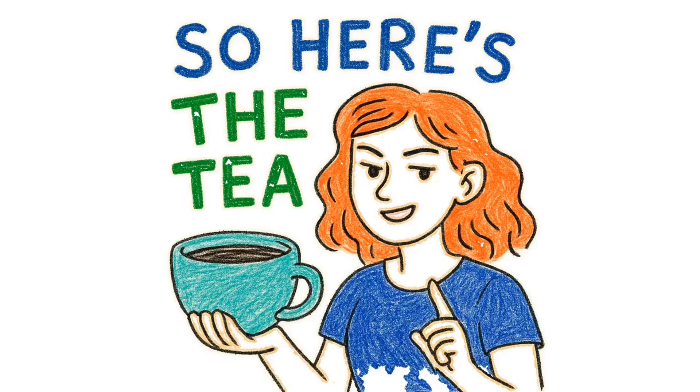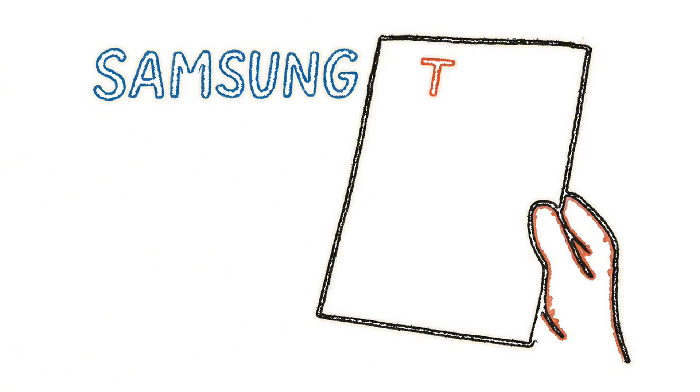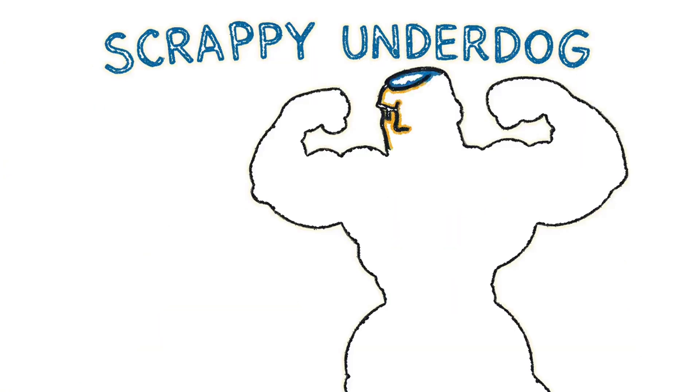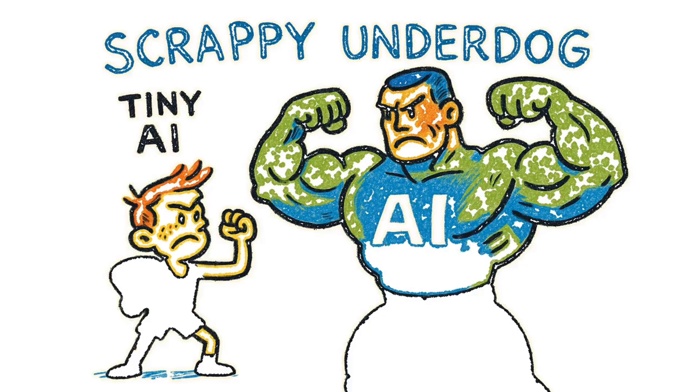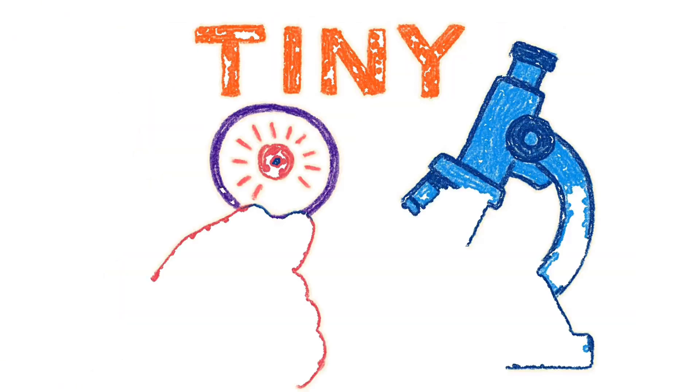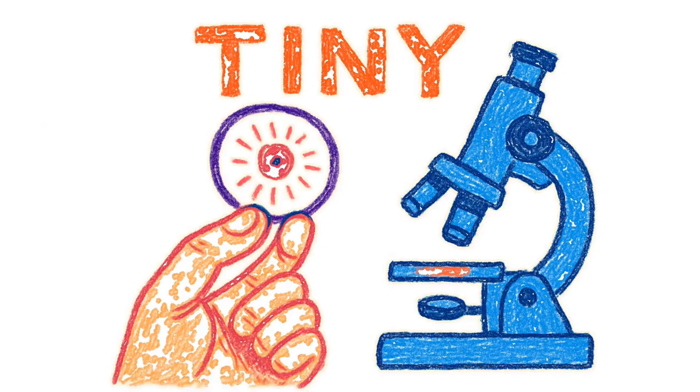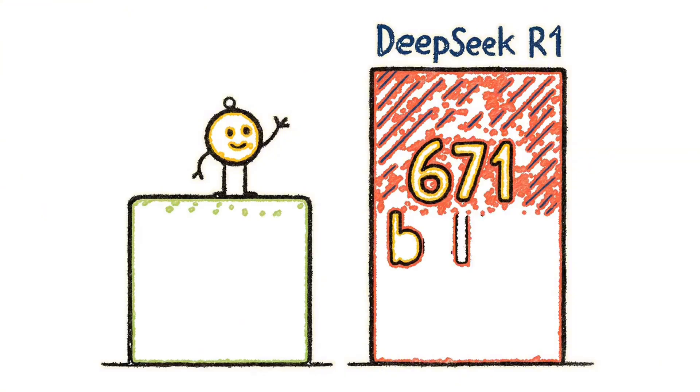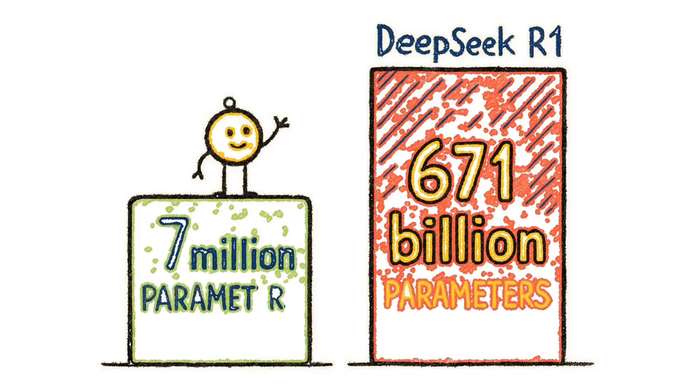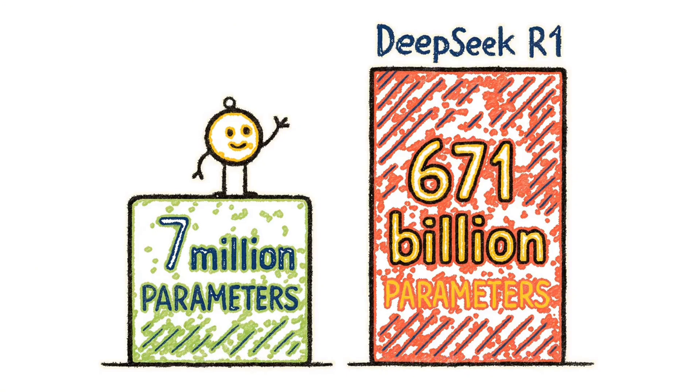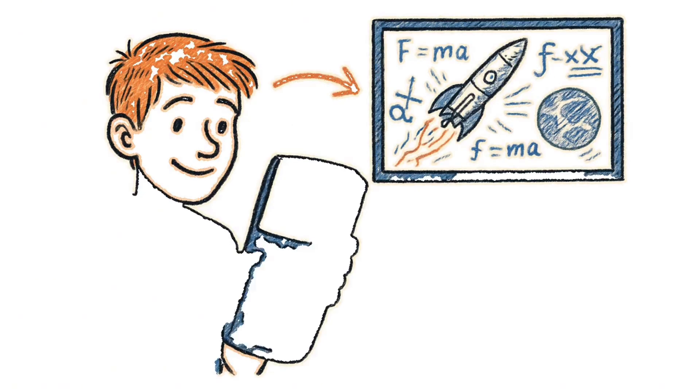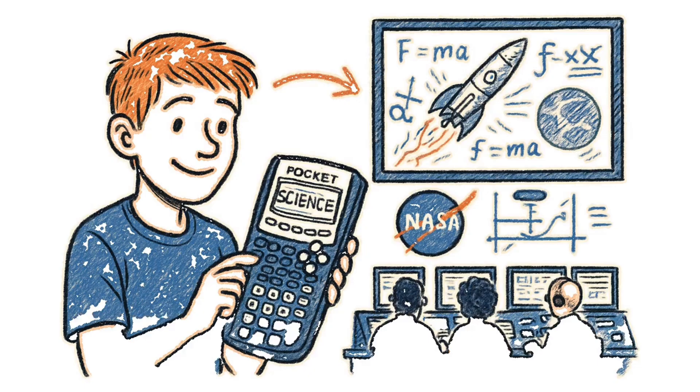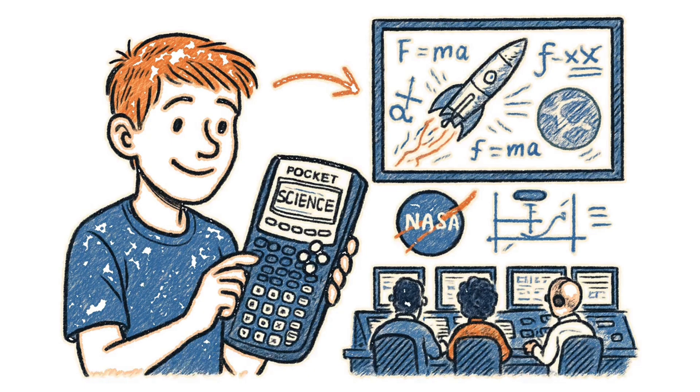So here's the tea. Samsung AI just dropped a paper on something called the Tiny Recursive Model, TRM for short. Think of it as the scrappy underdog in a world of AI bodybuilders. Now, when I say tiny, I mean microscopic. This thing has seven million parameters, while the big boys it's up against, like DeepSeek R1, have 671 billion. That's like a high schooler with a TI-84 calculator walking into a NASA control room and solving rocket science faster than their supercomputers. Awkward?